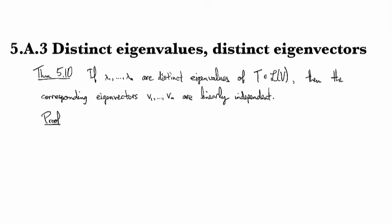The proof: we'll do this by contradiction. So by way of contradiction, suppose that they are not independent.